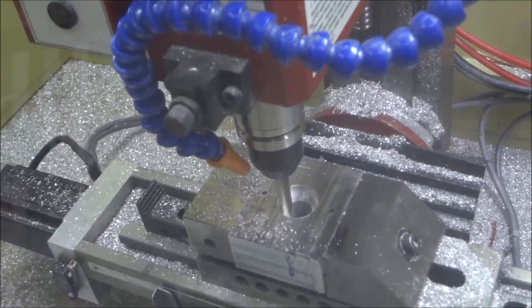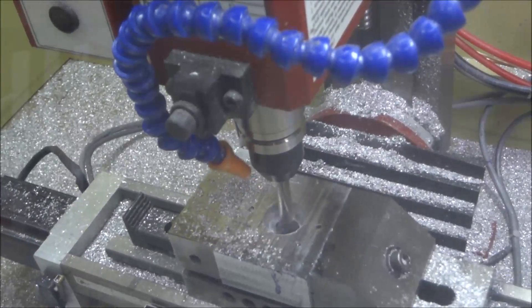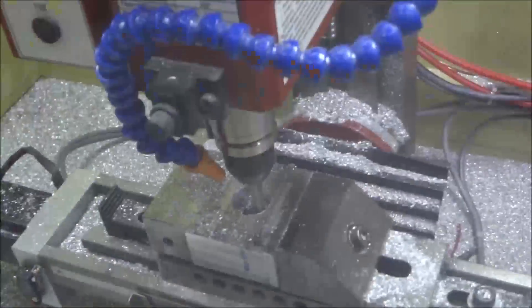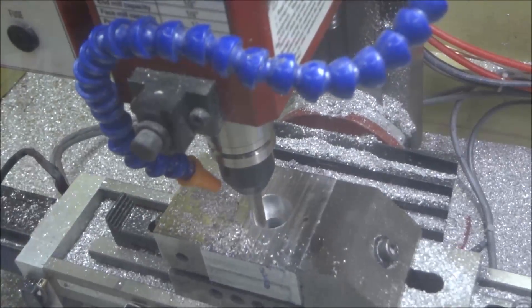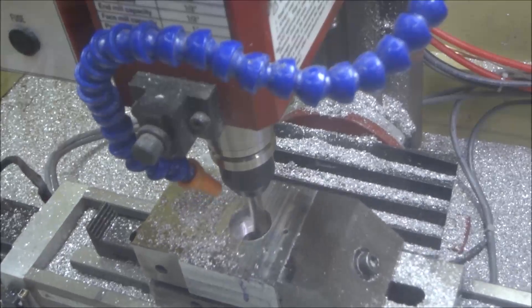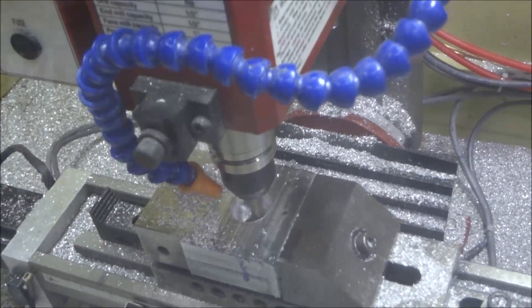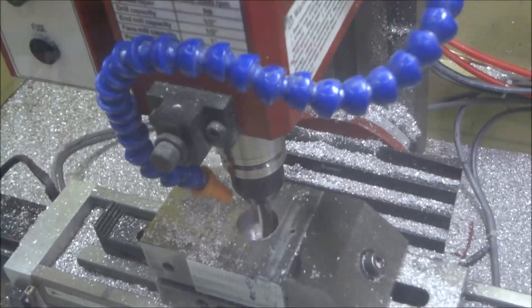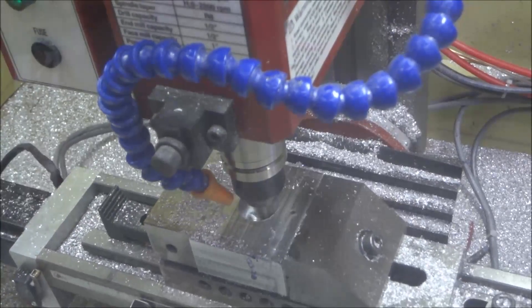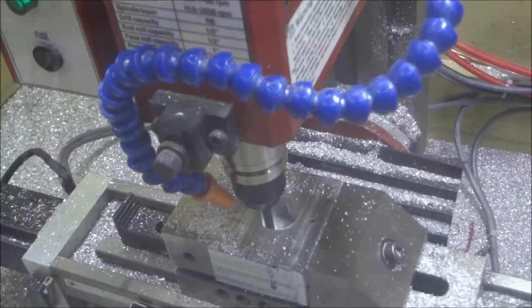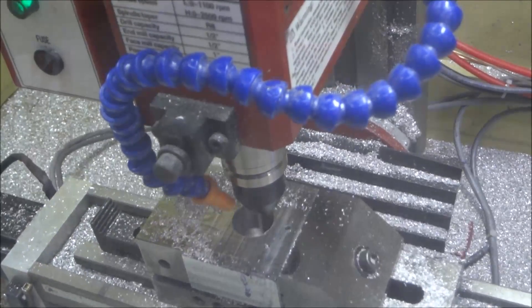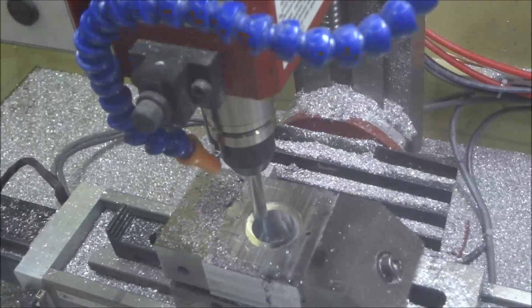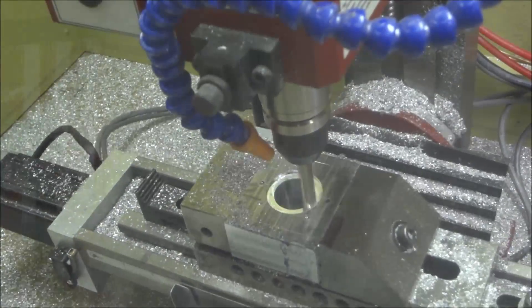I've got a 3/8 inch four-flute end mill here, about an inch and three-quarter inch long. The depth of cut here is about 0.025, and I'm running at 15 inches per minute. It did a really nice job here.